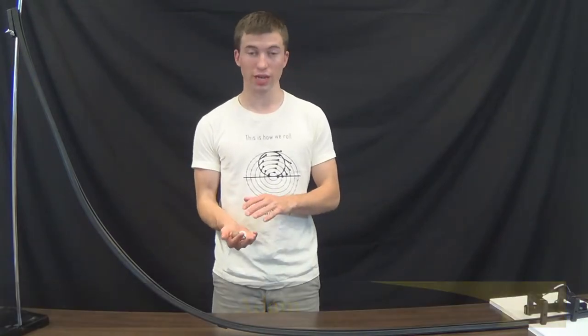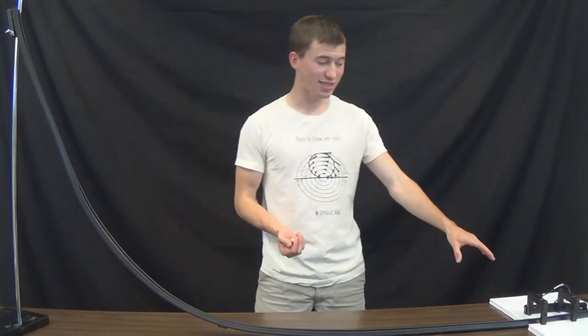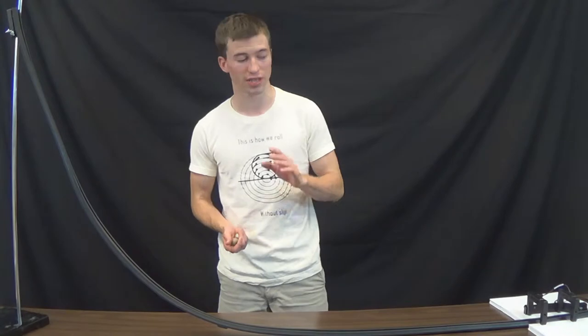Today we're going to be examining the conservation of energy using this model of a roller coaster. It's simply a rubber track with three different sized balls that we're going to be rolling down it. At this end we have a photo gate which will measure the final velocity of the balls as they pass through the gates. We're going to be dropping the balls from a height of 0.8 meters.